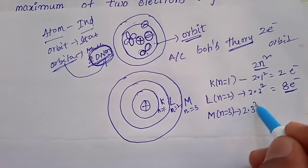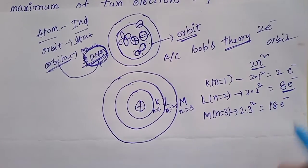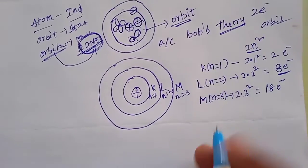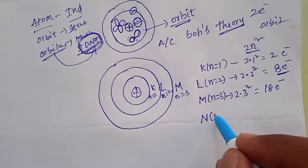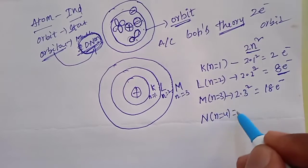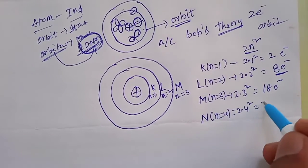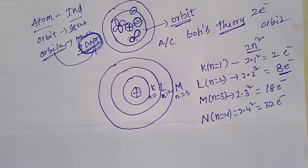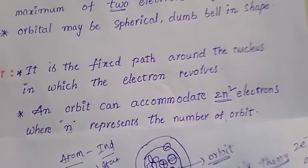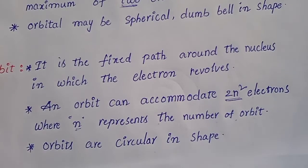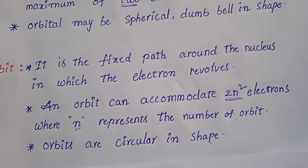For n=3 (M shell), 2×3² = 18 electrons. For n=4 (N shell), 2×4² = 32 electrons. Similarly, orbits are circular in shape.